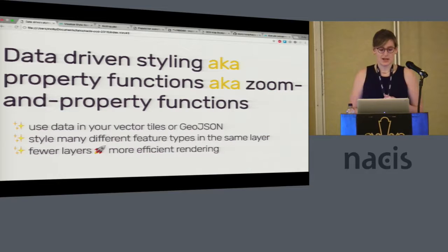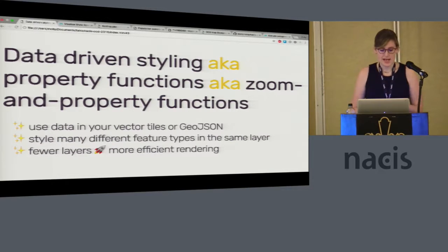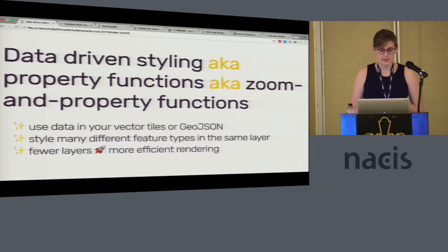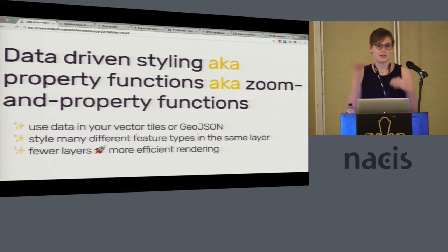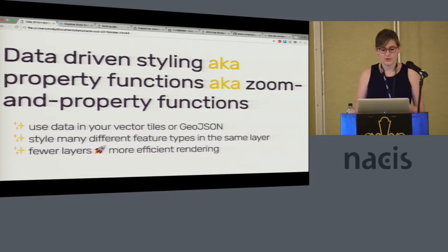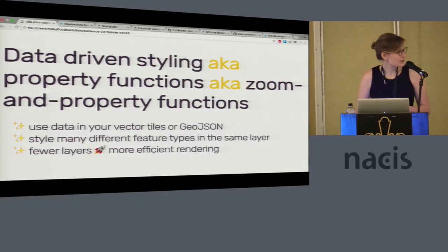On the official documentation side, we call these property functions because they are a function of the feature's property. You can use the data as a property and you can also style based on zoom level, so it's very flexible for map design. You can design your map from zoom level zero all the way down to 22 according to your data, however you want to.